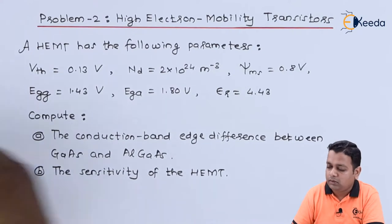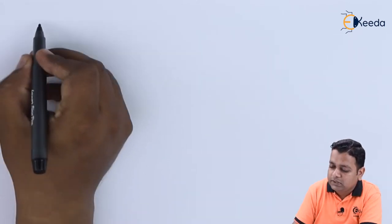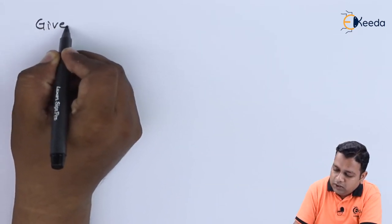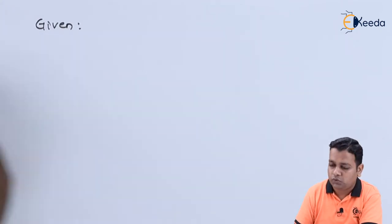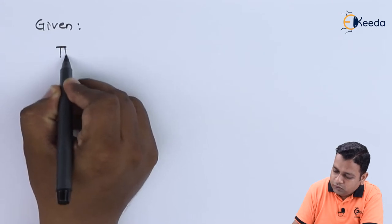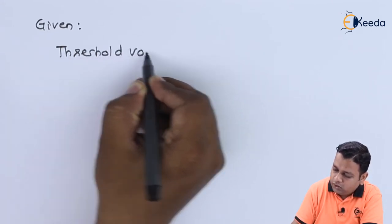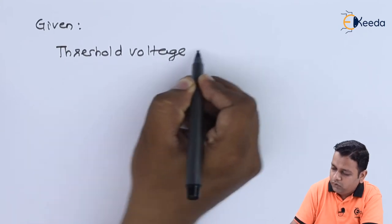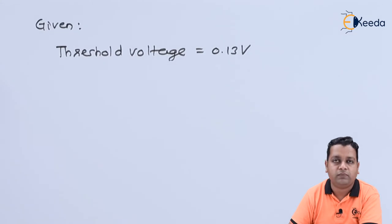Let us first identify the given six parameters. The very first parameter is represented as Vth, which is the threshold voltage. The value is 0.13 volts.